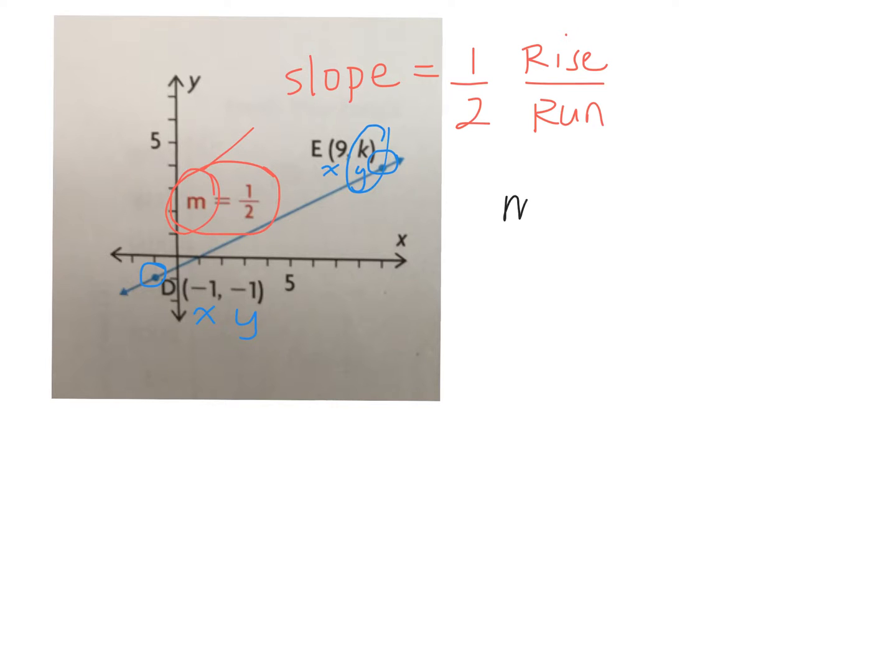We know that slope is equal to, what's the slope formula? Y2 minus Y1 over X2 minus X1. Okay, so let's label our coordinates first. Which one do you want to call coordinate 1, and which one would you like to call coordinate 2? We're going to call D coordinate 1, so X1, Y1, and E X2, Y2.